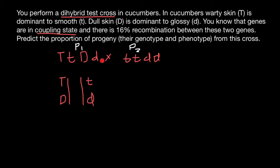Since parent one is heterozygous, the other chromosome has small t and small d alleles on it. The genotype of parent one is capital T, small t and capital D, small d. The genotype of parent two is small t, small d, small t, small d — the same recessive alleles on both chromosomes.